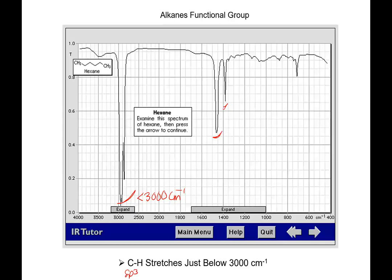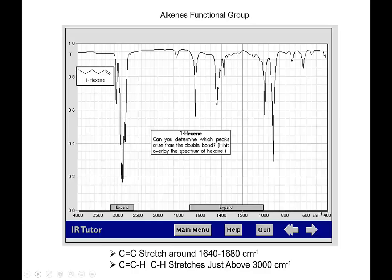Alkenes: just put a double bond in the molecule and all of a sudden you see a peak above 3,000. 3,000 is kind of an important line. When you see peaks below 3,000, that's sp³ hybridized C-H bonds. When you see them above 3,000, those are hydrogens attached to a double-bonded carbon—an sp² hybridized carbon. When they're above 3,000, that tells you you have an H attached to a C with a double bond.